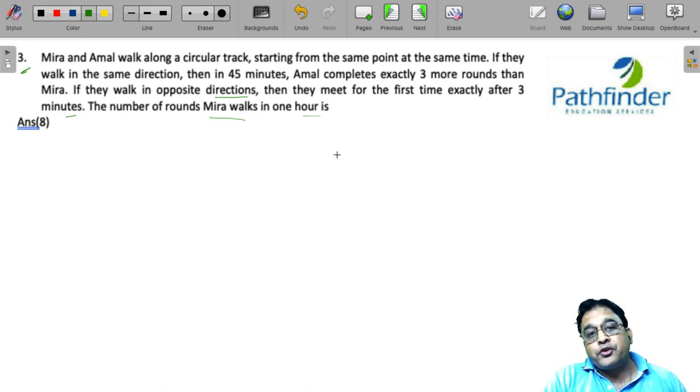Now, this is a question which you should tread with care. First thing I have to answer is question. Why? Because of the way the numbers are presented in this question. So, you are told that if they walk in the same direction, then in 45 minutes, Amal completes exactly 3 more rounds.